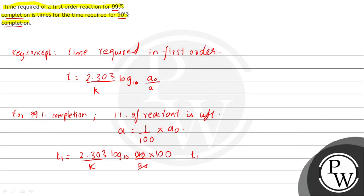So it comes t₁ is equal to 2.303 by k log₁₀ 10 square, so t₁ is equal to 2.303 by k. Log 10 is 1, so t₁ is equal to 2.303 by k into 2.